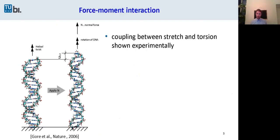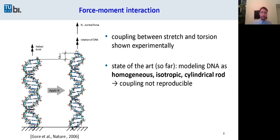So it is shown in experiments that there's a coupling between stretch and torsion. However, state of the art is to model DNA as a homogeneous isotropic cylindrical rod. Therefore, coupling is not reproducible.